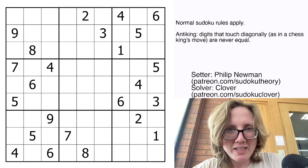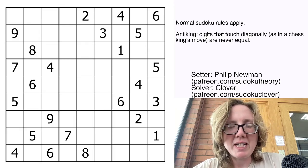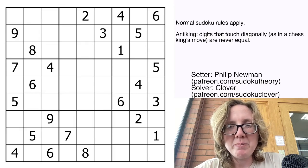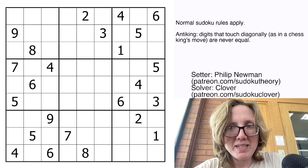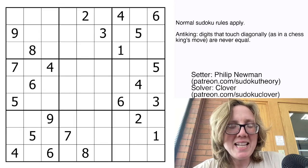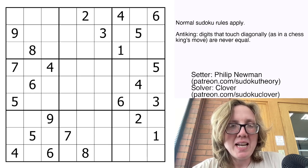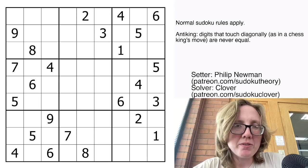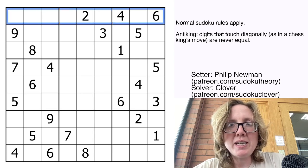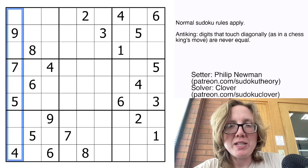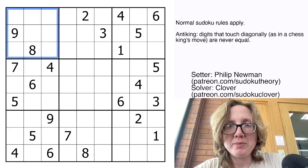Good morning my friends, this is Clover, and this is a walkthrough of the gas puzzle originally posted by Philip Newman on March 30th, 2024. This is an anti-king Sudoku, and that means we have normal Sudoku rules, so we're placing the digits 1 through 9 once each in each row, each column, and each outlined 3x3 region.